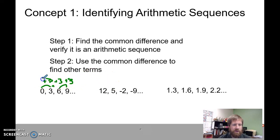So I've got all my terms with the same common difference, so this would be an arithmetic sequence. Twelve to five is minus seven, five to negative two is another minus seven, negative two to negative nine is another minus seven. 1.3 to 1.6—that's an increase of 0.3, to 1.9 another 0.3, and 2.2 is another 0.3. So these are all arithmetic sequences because they all have a common difference.